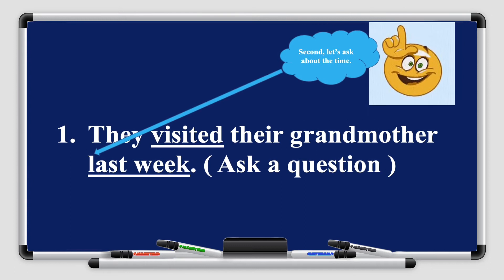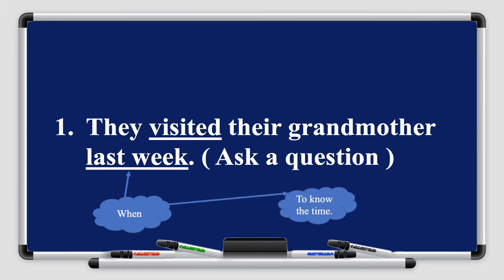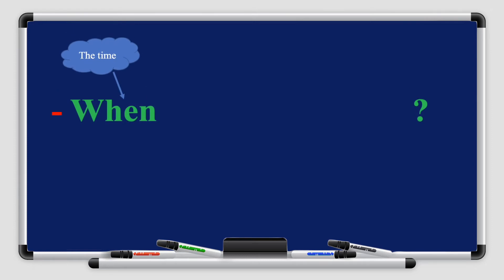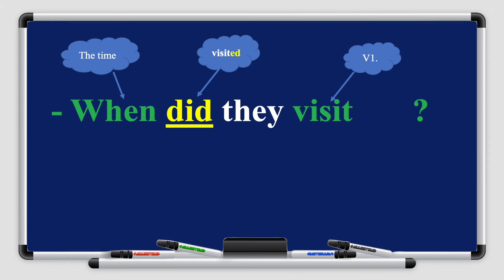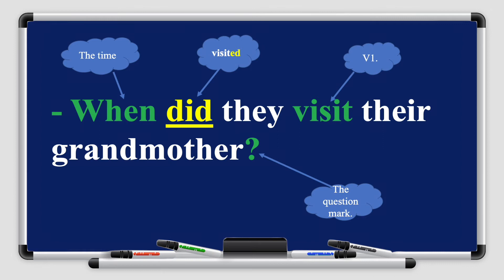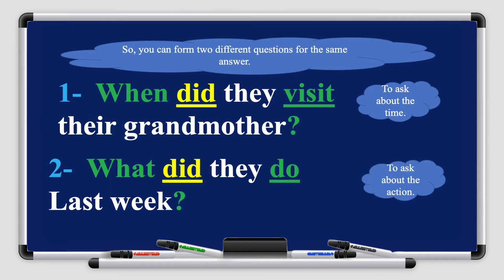Second, let's ask about the time: 'They visited their grandmother last week.' We use 'when' to ask about the time, then 'did' because we have the verb 'visited' in the past simple tense. When we ask a question, we change the verb to its root form — 'visited' becomes 'visit.' So: 'When did they visit their grandmother?' You can form two different questions with the same answer: 'When did they visit their grandmother?' to ask about time, and 'What did they do last week?' to ask about action.